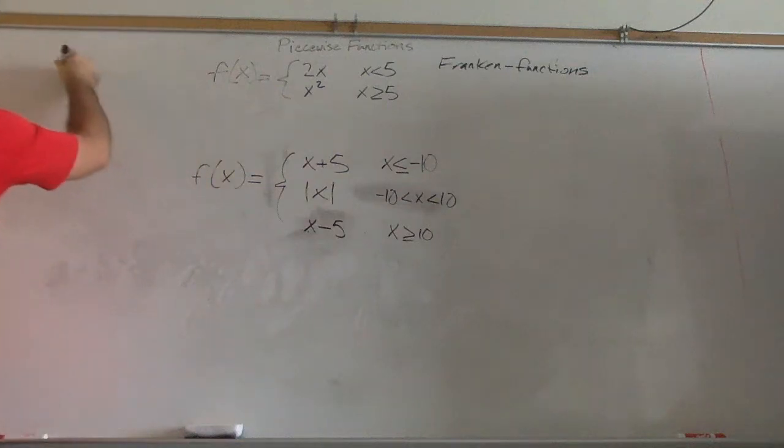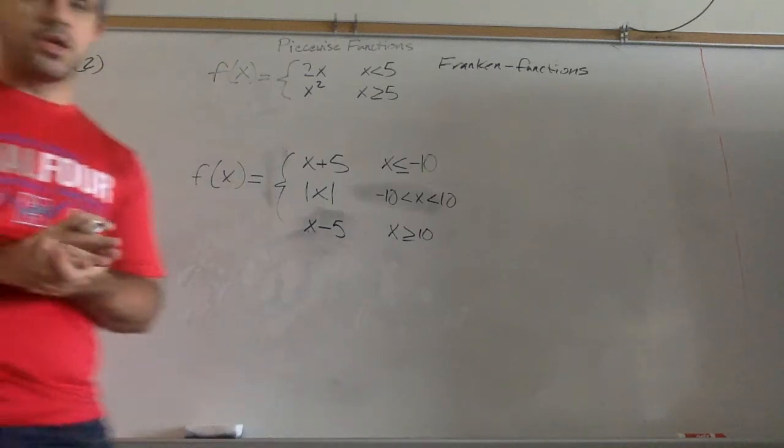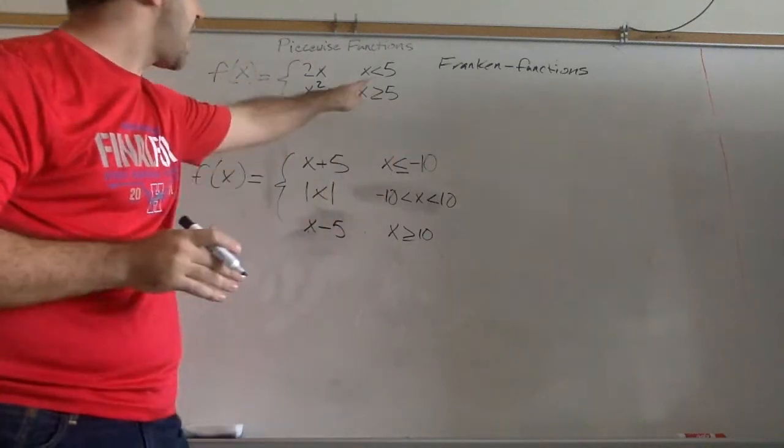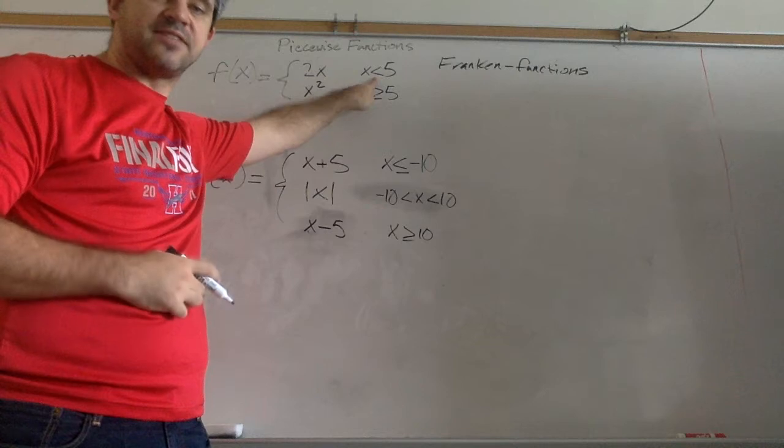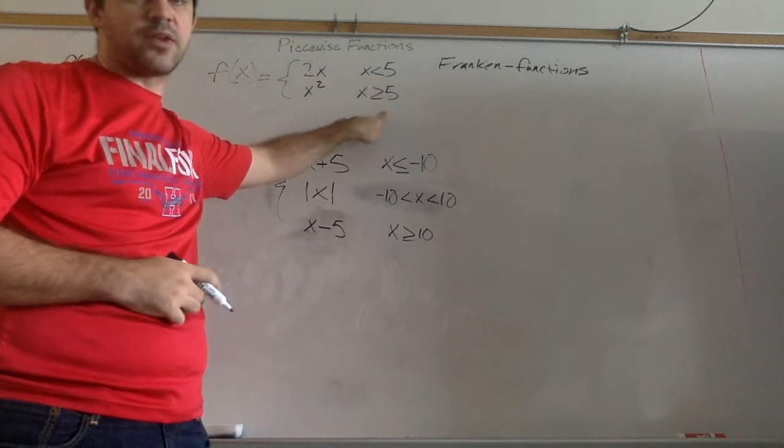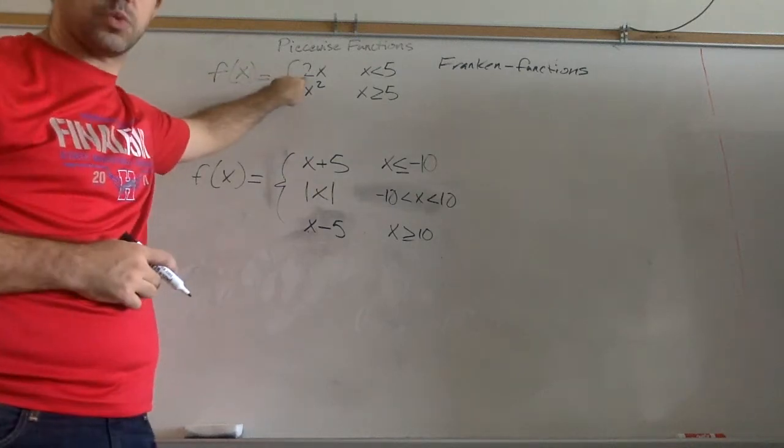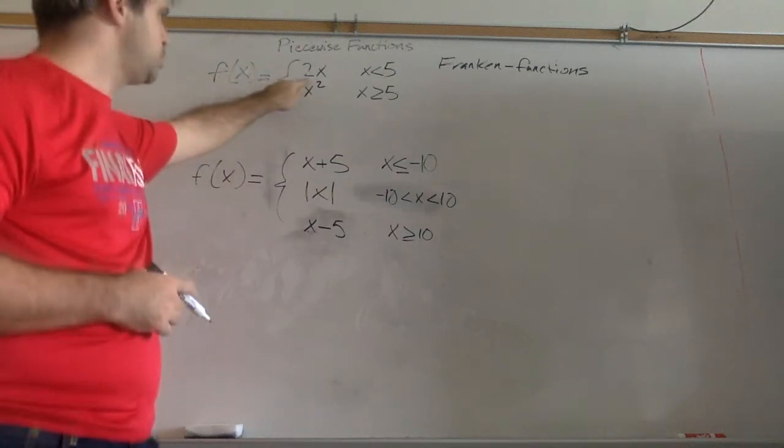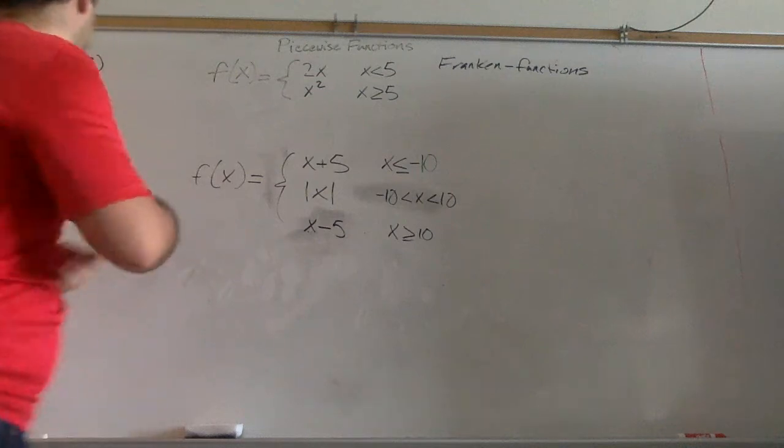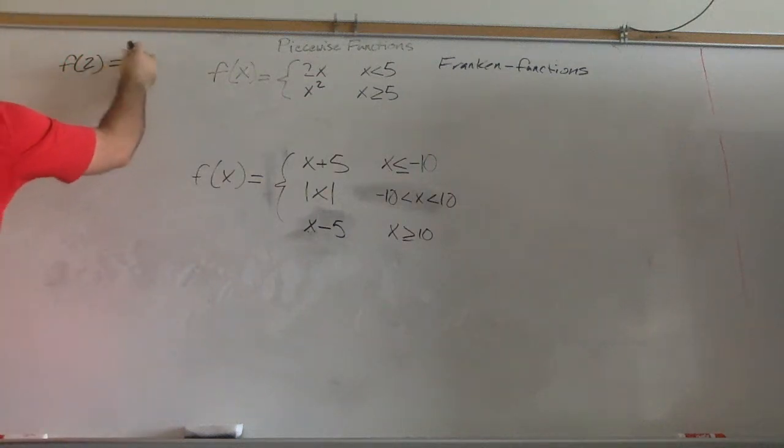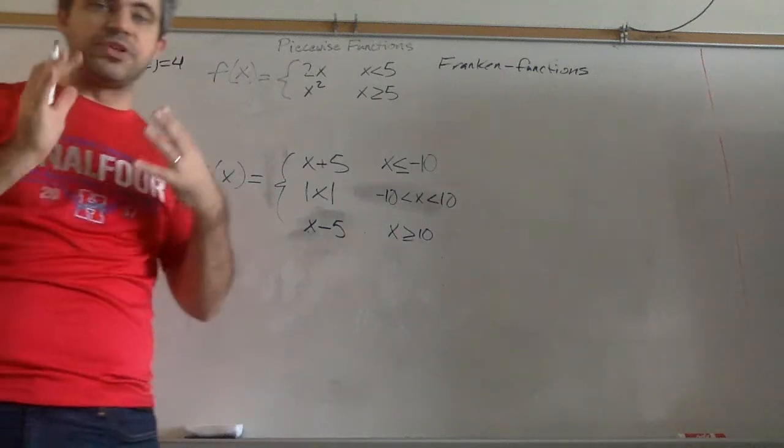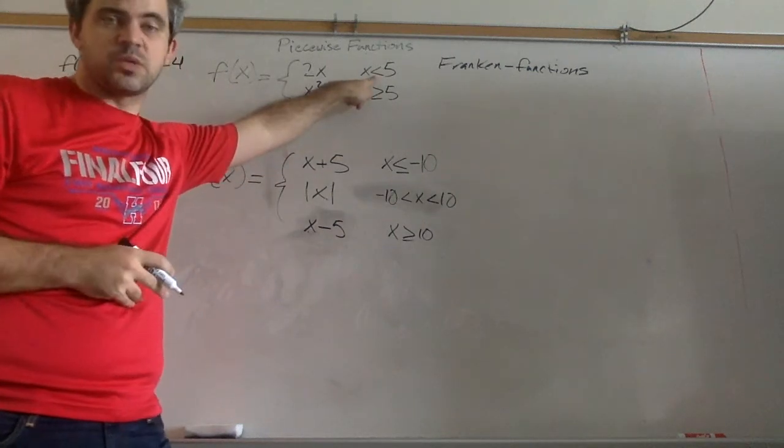For example, if I asked f of 2, the first thing you do is check to see if x is less than 5 or if x is greater than or equal to 5. In this case, it's less, so we're going to follow this first rule. So it's going to be 2 times 2, which is 4. We followed the first rule because our x was less than 5.